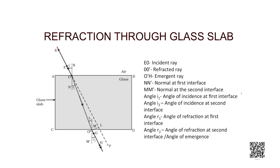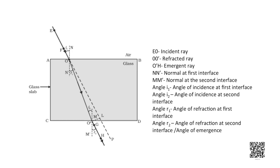The given figure shows the path of a ray of light through a glass slab ABCD. Here, EO is a ray of light incident on interface AB. An interface is the boundary separating two transparent media. NN dash is the normal to the interface at the point of incidence. It is important to draw the normal, as the angle of incidence is taken as the angle between the incident ray and the normal at the point of incidence.